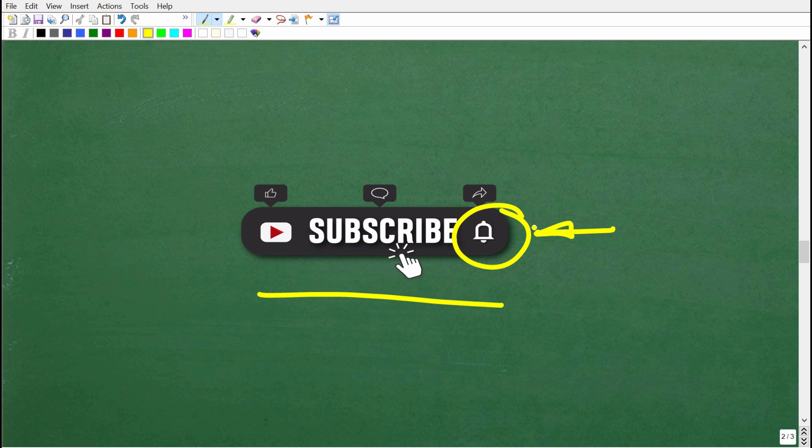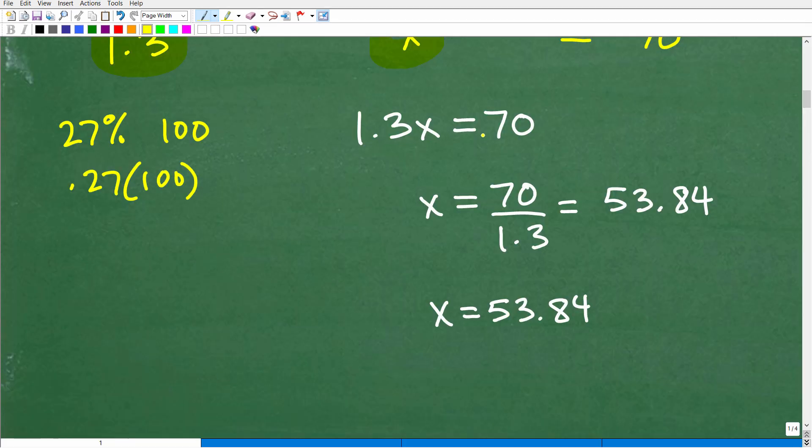Now, if you need additional help in math, make sure to check out my full main math courses. You can find links to those in the description of this video. So let's go ahead and get back to the problem. So 1.3x is equal to 70. How do I solve for x?